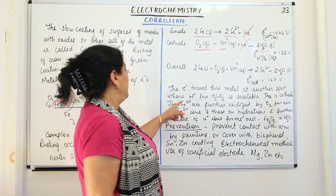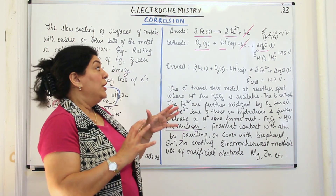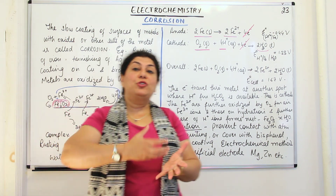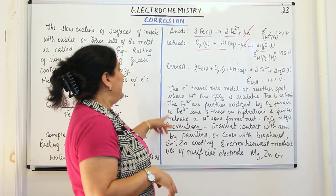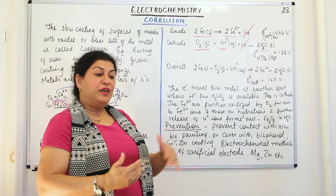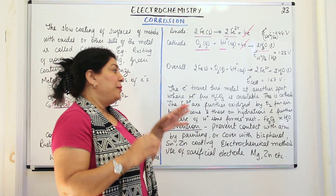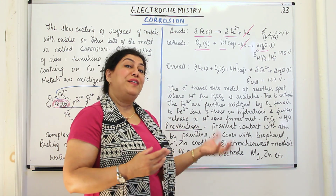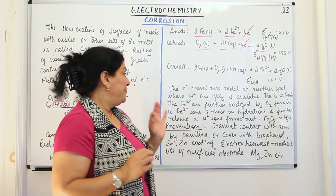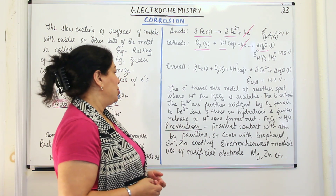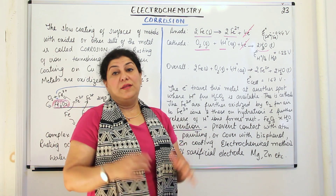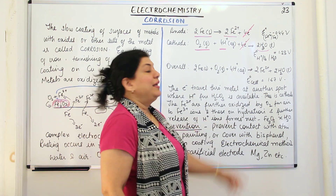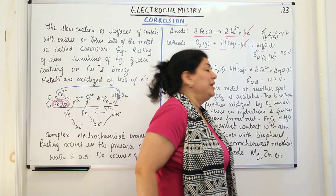The Fe2+ ions formed at the anode are present on the surface and will further react with oxygen present in the air. They get further oxidized from ferrous ions to ferric ions — that is, from Fe2+ they get converted into Fe3+ ions by reacting with oxygen. The compound formed is Fe2O3, ferric oxide. When these ferric ions get hydrated, they release H+ ions further and form hydrated ferric oxide, which is known as rust.